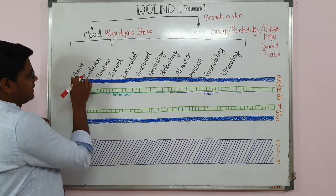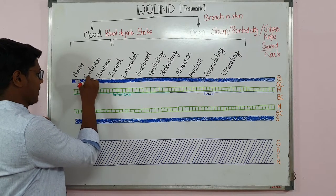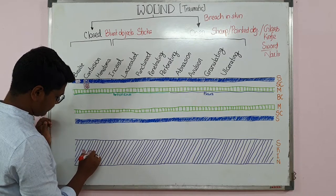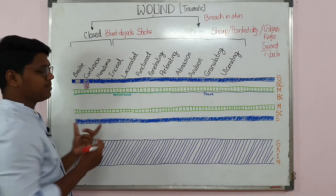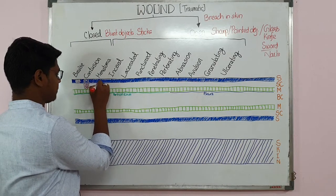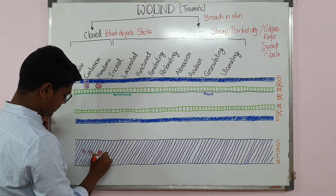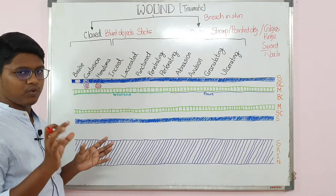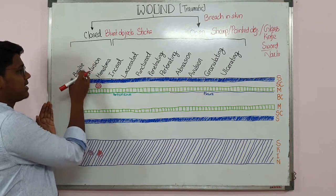Next is contusion. In contusion, the skin and the subcutaneous tissue will be involved. From above it will look the same as a bruise, but remember the pain in contusion is more than in a bruise. Next is hematoma — hematoma is basically accumulation of blood in a cavity, usually in subcutaneous spaces. From above the skin it will look the same as bruise and contusion, but the difference is that in hematoma you will mostly find a fluid that you can feel by physical examination. You can say bruise is a mild contusion — they are more or less the same.